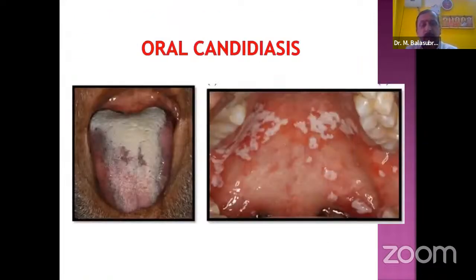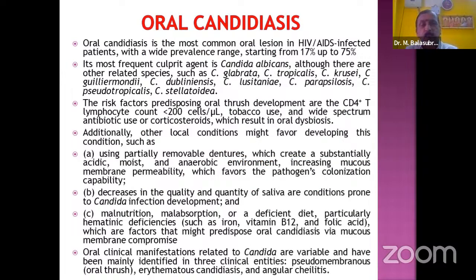Oral candidiasis is the most common oral lesion in HIV/AIDS patients, with a prevalence ranging from 17% to 75%. You can see white patches on the tongue and over the hard and soft palate which cannot be peeled off. Its most frequent causative agent is Candida albicans, though other related species such as Candida glabrata, Candida tropicalis and Candida krusei also exist. Risk factors include CD4 T-lymphocytes less than 200 cells per milliliter, tobacco use, broad-spectrum antibiotic use or corticosteroids, resulting in oral dysbiosis.